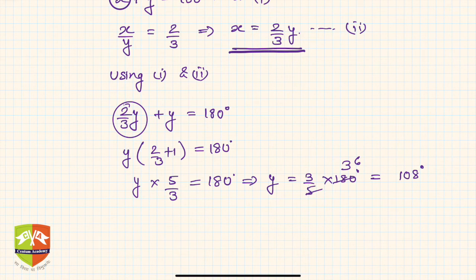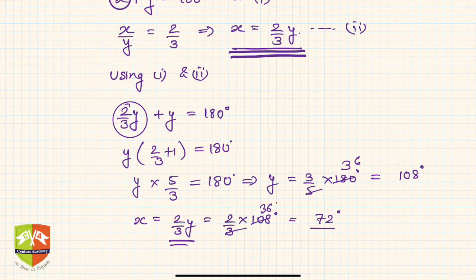So y is 108. What would be x then? Simply x is 2 by 3 y, which is nothing but 2 by 3 into 108 degrees. I know this because of this relationship. So hence the answer is 2 by 3 into 108, which is nothing but 72 degrees. So the solution to this question is 108 degrees and 72 degrees.